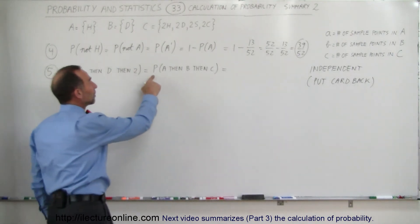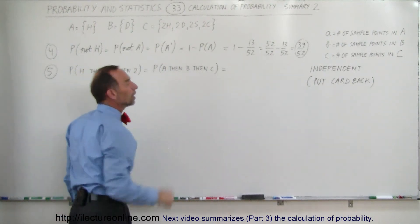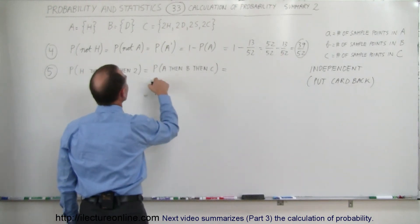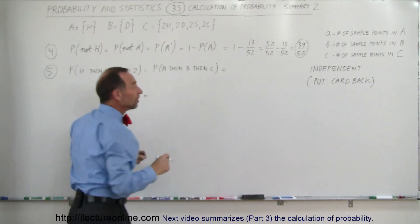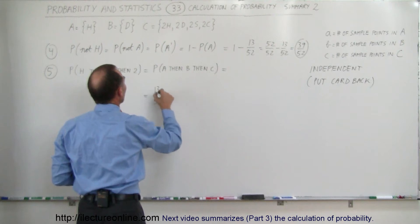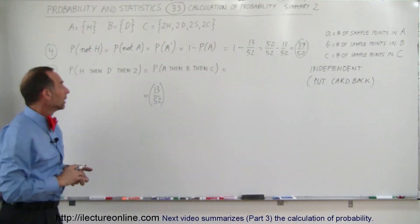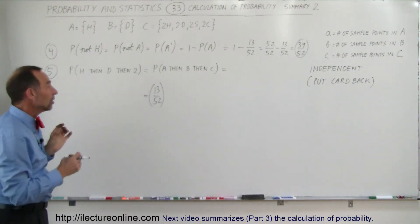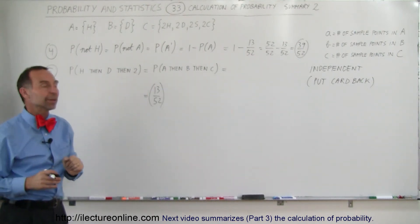We write it as: what's the probability of getting an outcome in event A, then an outcome in event B, then an outcome in event C? Here you have three things that need to happen, and each time there's a certain probability associated with it. To get the probability of doing all three things in a row, we have to multiply the probabilities.